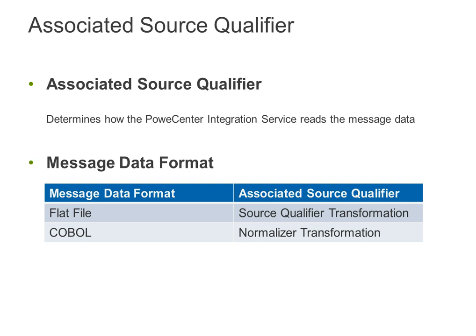Associated source qualifier. What is associated source qualifier? This is what you need to use if you deal with the flat file data format with your MQ source. The associated source qualifier determines how the PowerCenter integration service reads the message data. Also, if you have a cover message data format, in that case you have to use normalizer transformation.